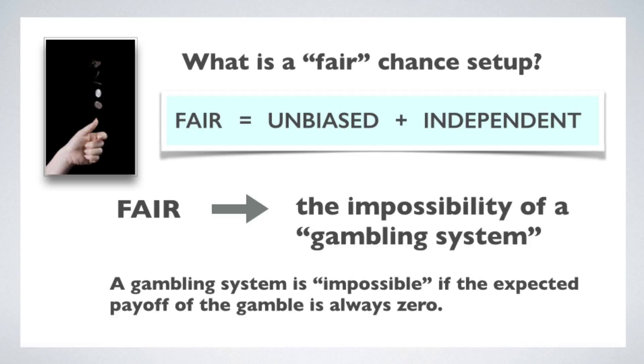Still another way to say it is that the expected payoff of a fair gamble is always zero. That means that if you bet on the outcomes of a fair chance setup, you may win or lose money in the short run, but in the long run, your wins and losses will even out. So the expected payoff is zero.